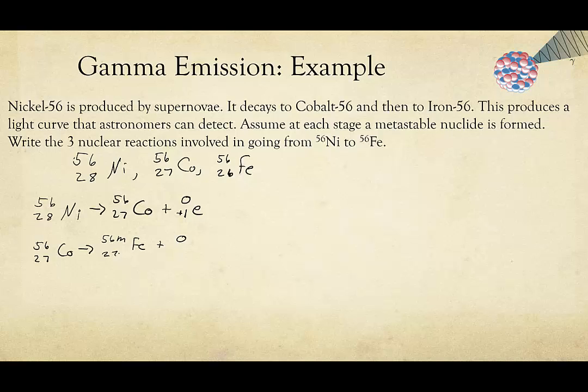Here our mass unit once again doesn't change, and our charge changes by one, and so we'll put a plus one there. And now we can do our last one, which is simply to take the iron-56 and go from a metastable nuclei to a stable nuclei by releasing gamma radiation.